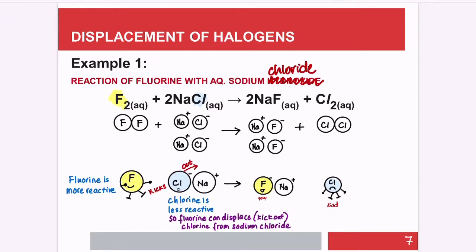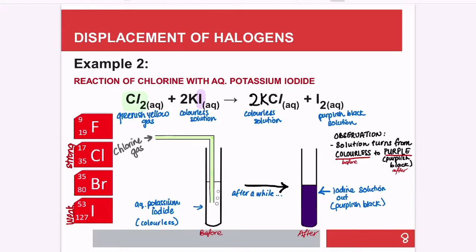Example two: the reaction of chlorine with aqueous potassium iodide. The balanced equation is Cl₂ + 2KI → 2KCl + I₂. Chlorine gas is a greenish yellow gas, potassium iodide is a colorless solution, and iodine is a purplish black solution.